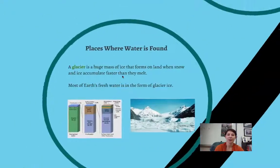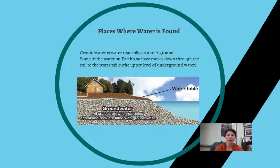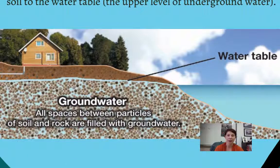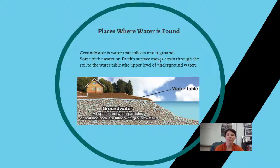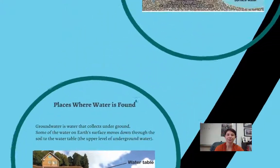So then what about groundwater? So groundwater is water that collects underneath the ground and it fills in all the spaces between the particles of soil and rock. The very top part of the groundwater, the highest level of the groundwater, is called the water table. So some of the water on Earth's surface moves down through the soil to the water table. That's called percolation. It percolates through and fills up all these spaces, and it basically forms this groundwater. And then the top, uppermost part of the groundwater is called the water table.